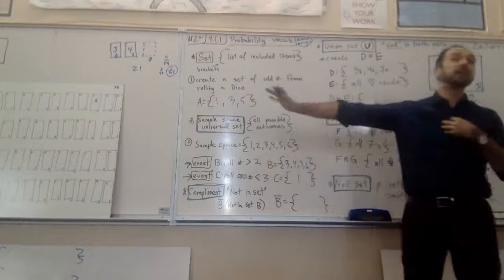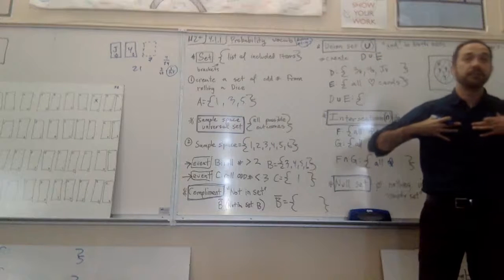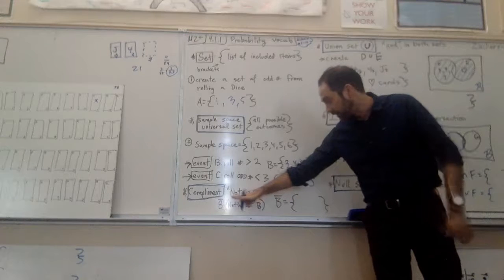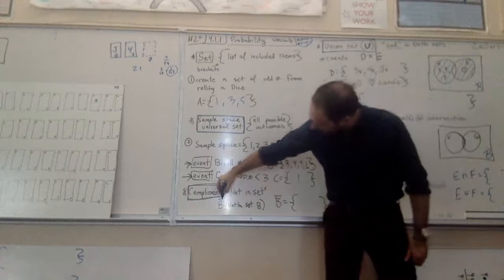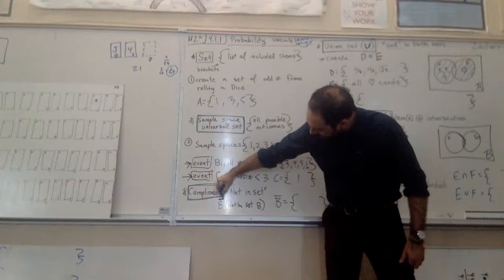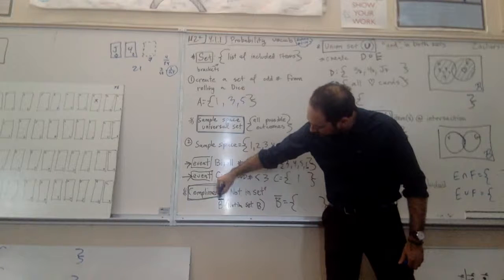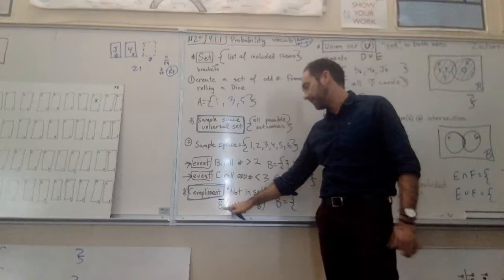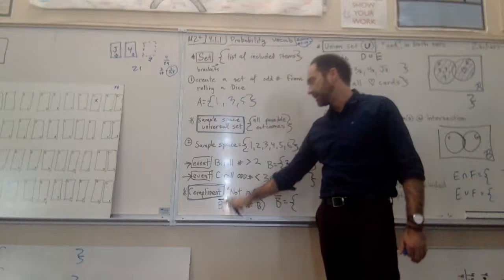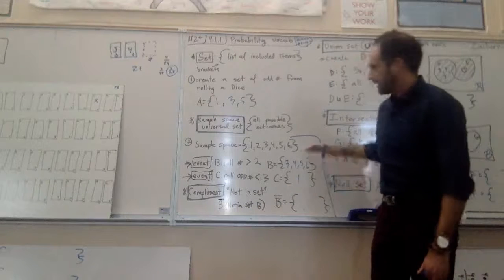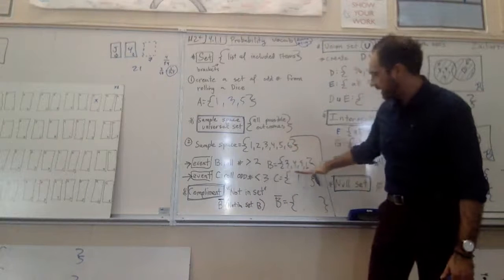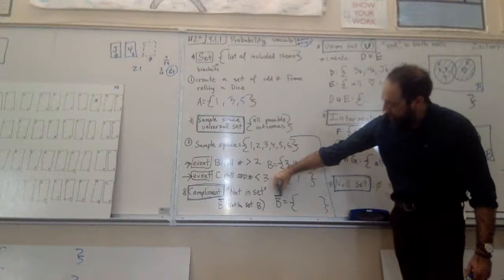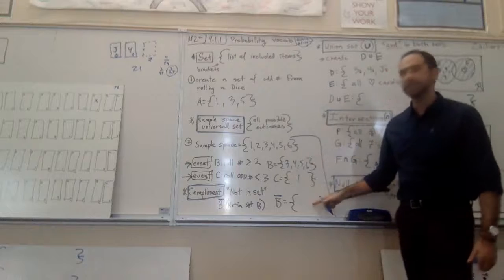So the A complement, just like if I needed someone to complement me, I would need, I'd want them to have the things that I don't have, right? I want them to have the things that I don't have so that we can together be stronger. So not in the set, this complement, this little dash mark here is how we know. If we look for the complement, so make sure that dash above the B, the complement is denoted by this - this is the complement of B. So all this is the same. The sample space is here, here's our set B.